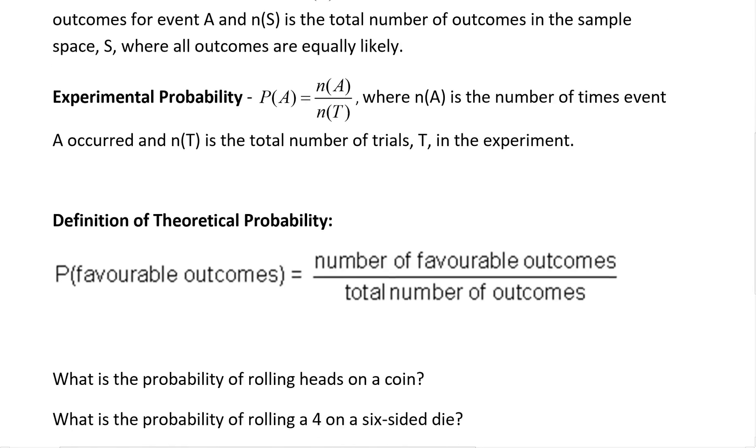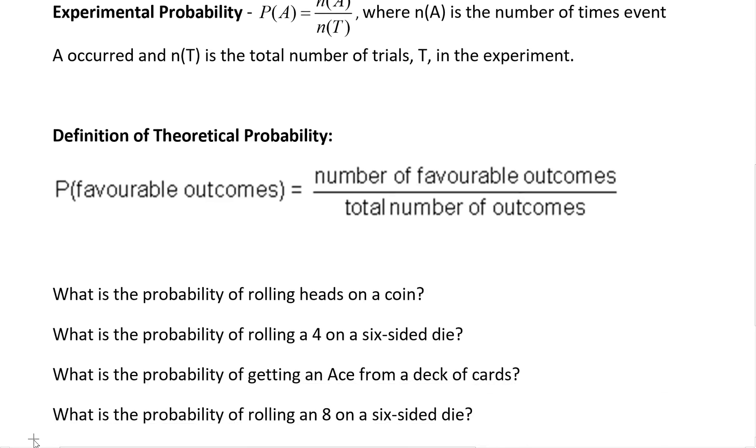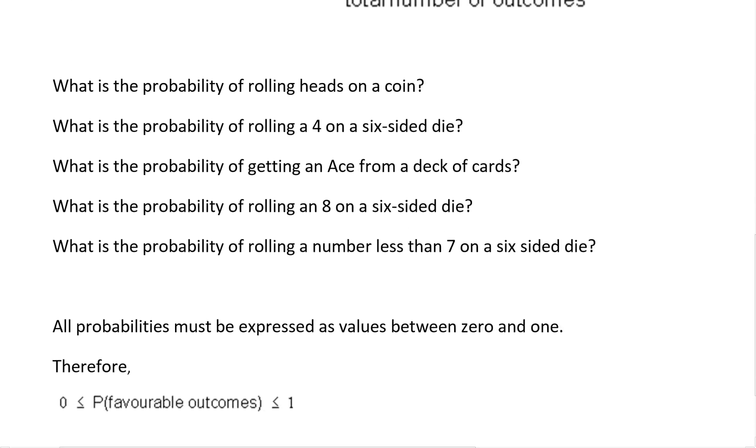So what is theoretical probability? It is the number of favorable outcomes divided by the total number of outcomes and a lot of you have seen this I'm sure before but let's review.